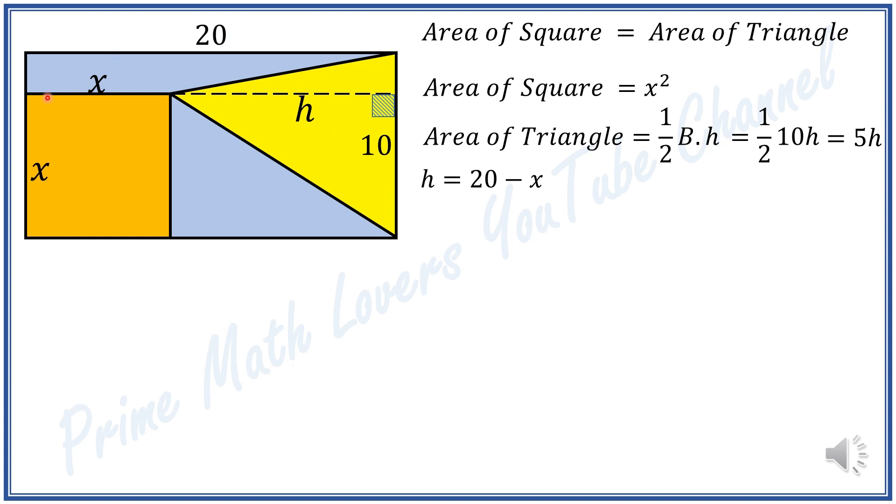Now we need to find h. As we can see on the diagram, x plus h equals 20, so h can be calculated as 20 minus x. Therefore, the area of the triangle will be equal to 5 times 20 minus x, or 5h.